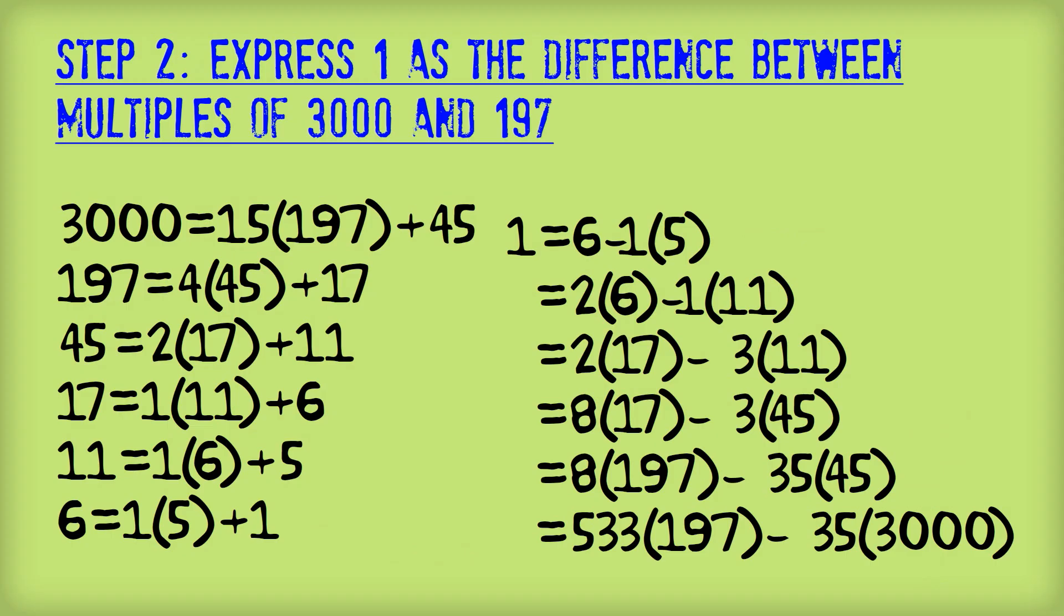And now we want to get rid of the 5. And to do that, we look at this line here, which gives us 5 in terms of multiples of 11 and 6. We substitute that into this and we get that. Now we want to get rid of the 6. For that, we look at this line here. We substitute this line into this line and we get this line. And we just continue this process until we get right down the bottom here,